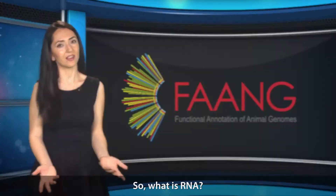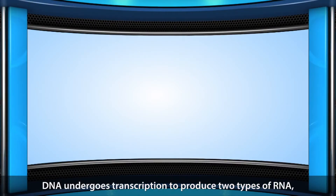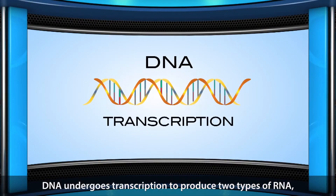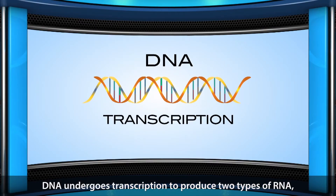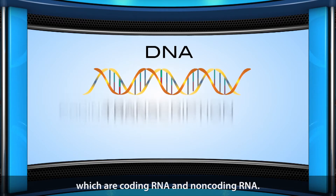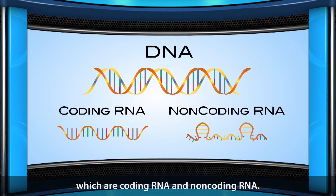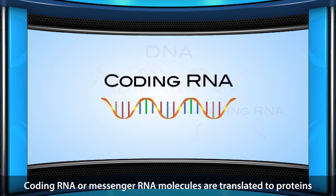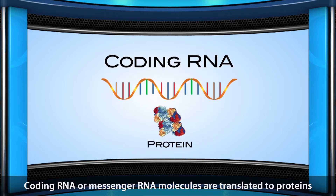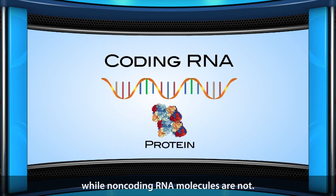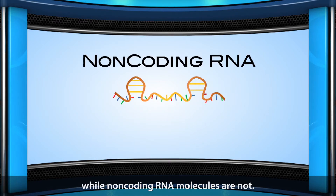So, what is RNA? DNA undergoes transcription to produce two types of RNA, which are coding RNA and non-coding RNA. Coding RNA, or messenger RNA molecules, are translated to proteins, while non-coding RNA molecules are not.